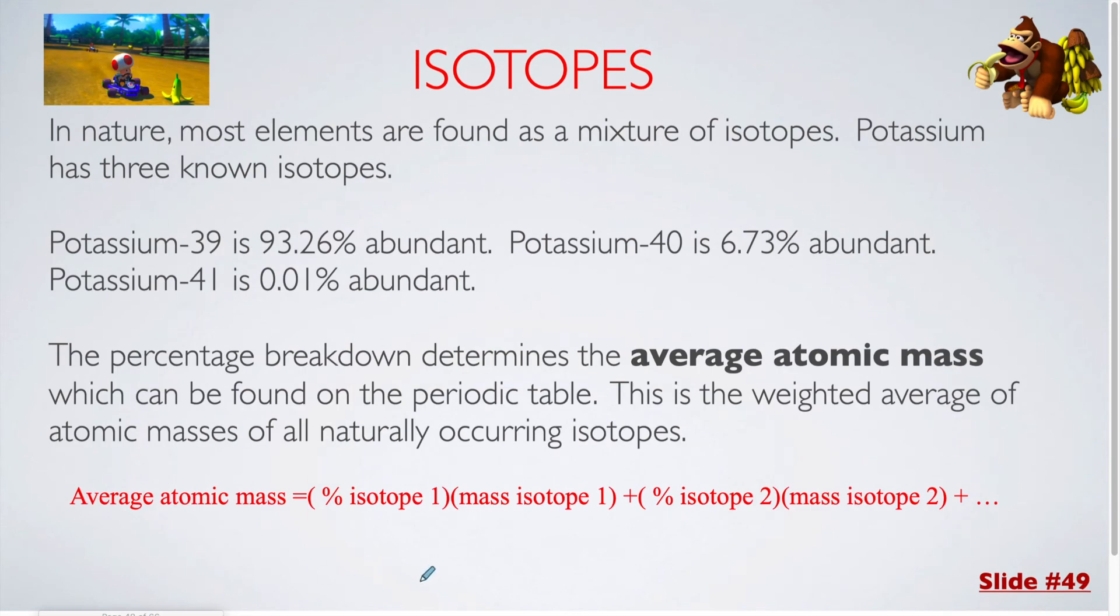In nature, most elements are found as a mixture of isotopes. Potassium has three known isotopes. If we look at the percentage breakdown, most potassium is potassium-39, and that's 93.26% abundant. Potassium-40 is 6.73% abundant, and potassium-41 is 0.01% abundant.